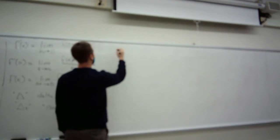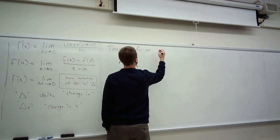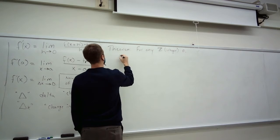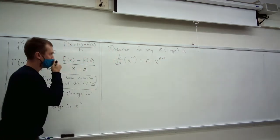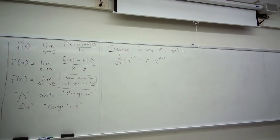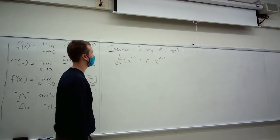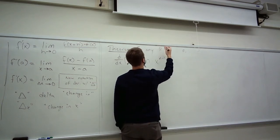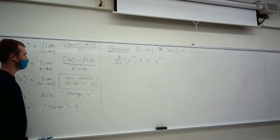Last time, right at the end, we learned this theorem: for any integer n, the derivative with respect to X of X to the nth power is just n times X to the n-minus-1. That was the key finding. It can actually be more general — it doesn't need to just be an integer or a natural number. We can pick any real number.